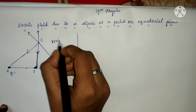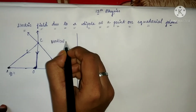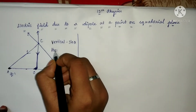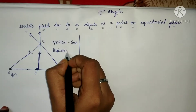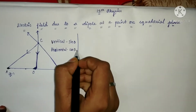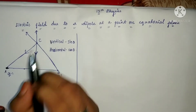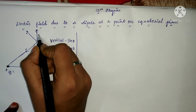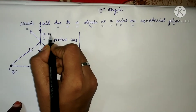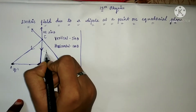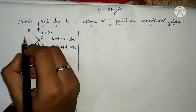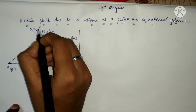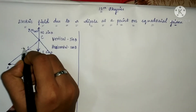The vertical component is sin θ and the horizontal component is cos θ. So we have a vertical component which is sin θ. For the positive charge: E-plus times sin θ. For the negative charge: minus E times sin θ. For the horizontal: plus E cos θ and minus E cos θ.